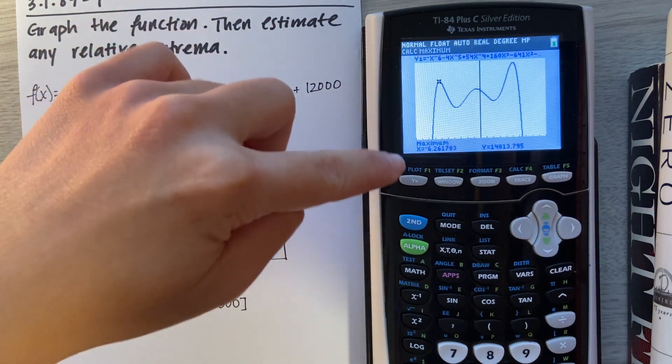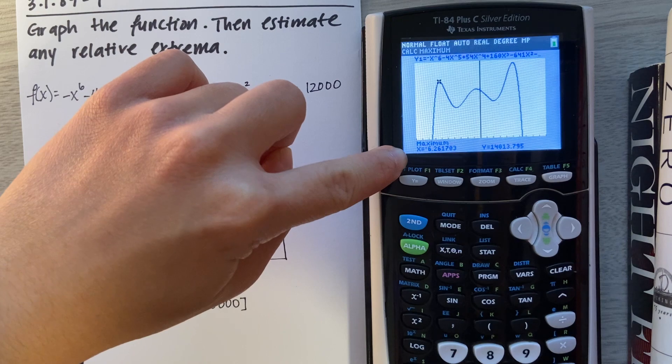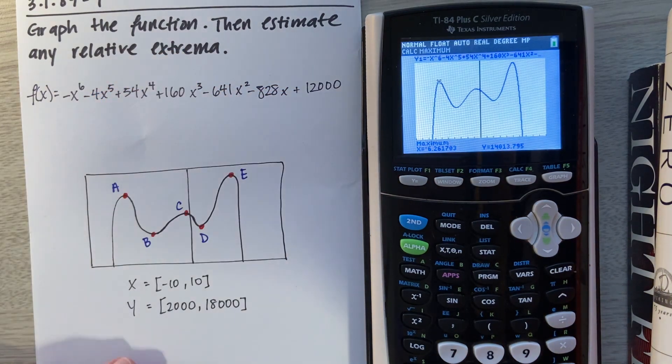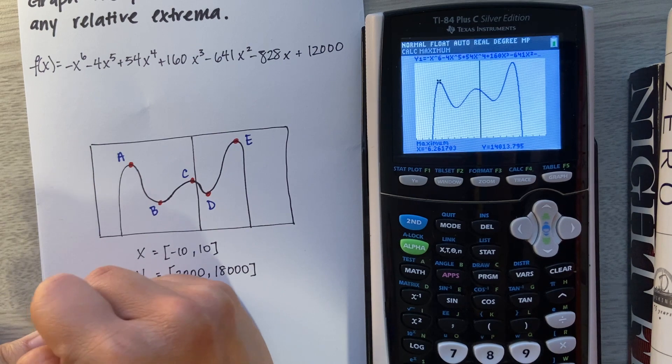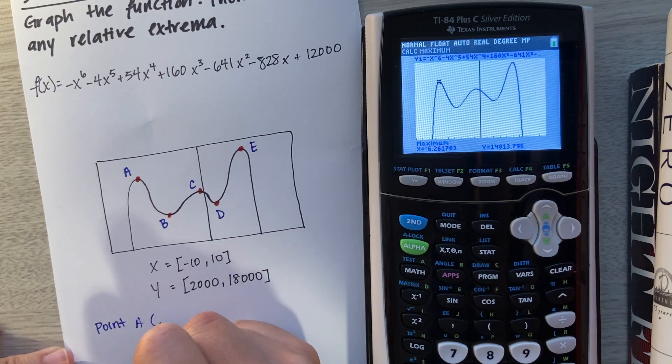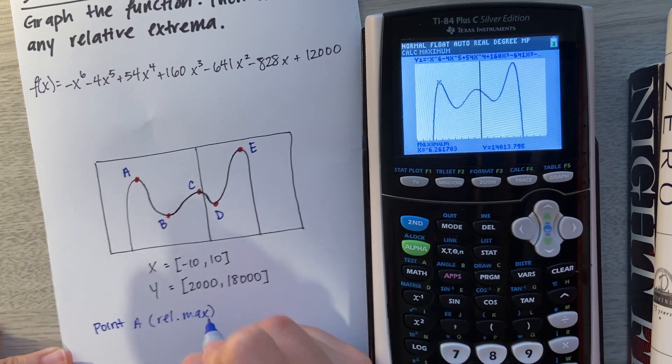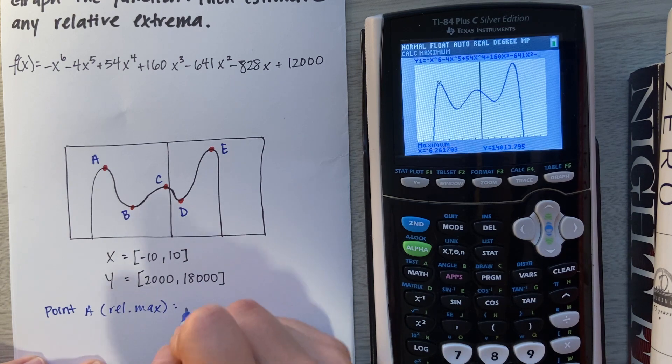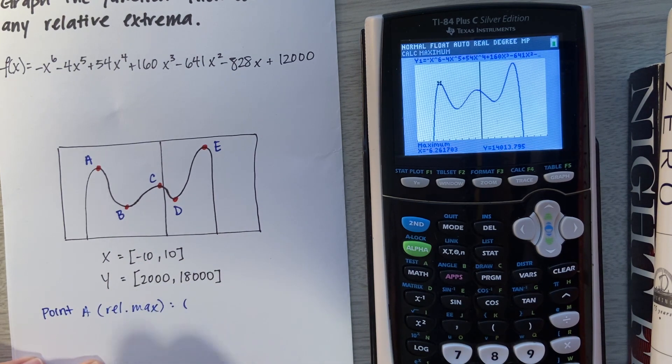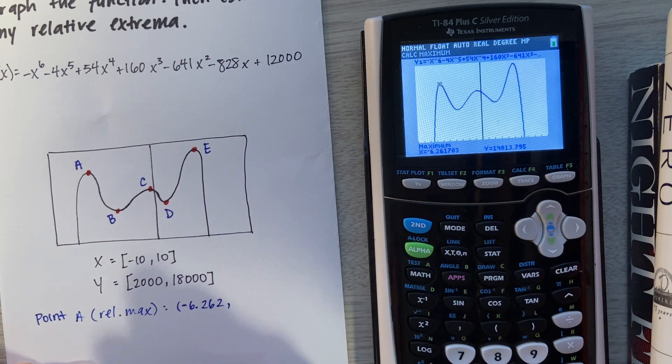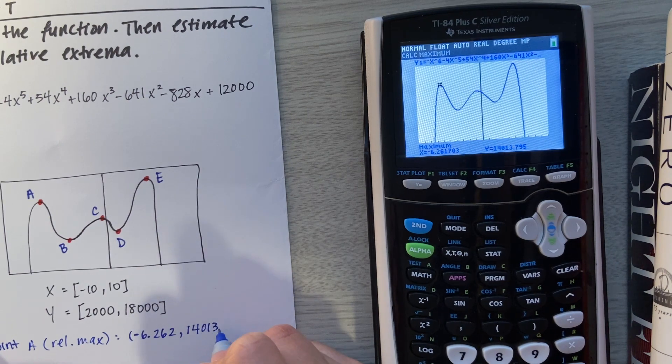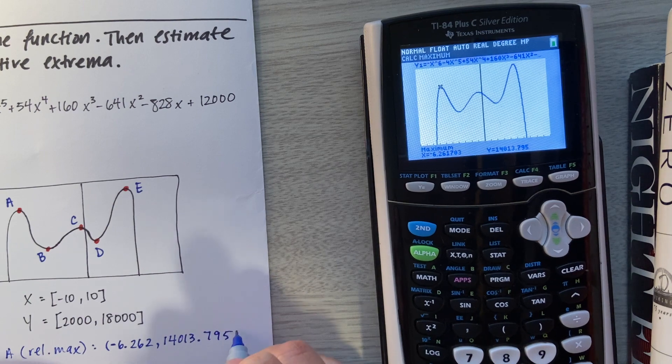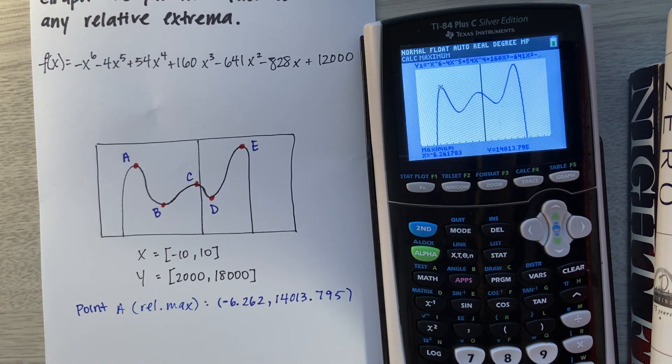And here we are. At the bottom, it says Maximum. At the last line, it has your X and Y coordinates. Over here on the left-hand side on my paper, I'm going to write down point A. It's a relative max. I'm going to round each coordinate to three decimal places. The X coordinate is -6.262, 14,013.795. We got point A.